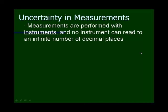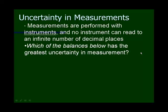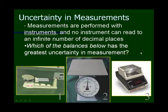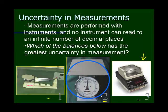There's always some imperfection, and this depends on our instruments. Measurements are performed with instruments, and nothing is perfect — nothing can be read to an infinite number of decimal places. Looking at the balances shown: a triple beam balance, an electronic balance we'll use in science lab, and a grocery store balance. The electronic balance gives the best answer, and the grocery store balance has the greatest uncertainty.